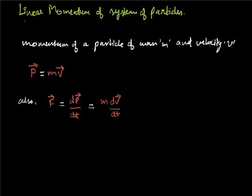If you consider a system of n mass particles having different velocities v1, v2, and so on, the linear momentum of the different mass particles are respectively m1v1, m2v2, m3v3, and so on.